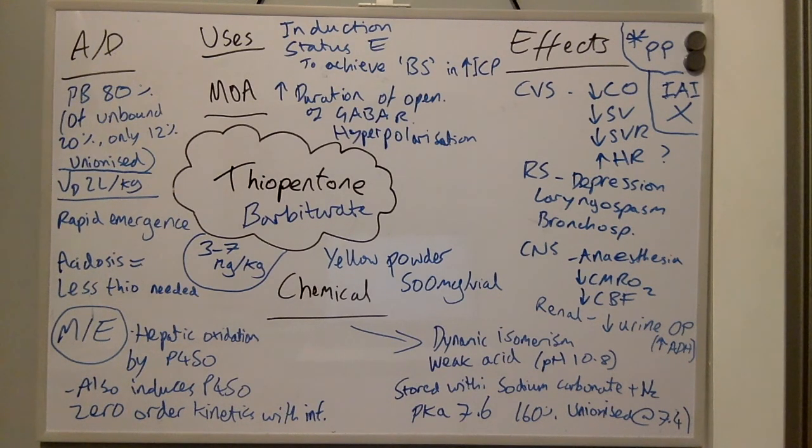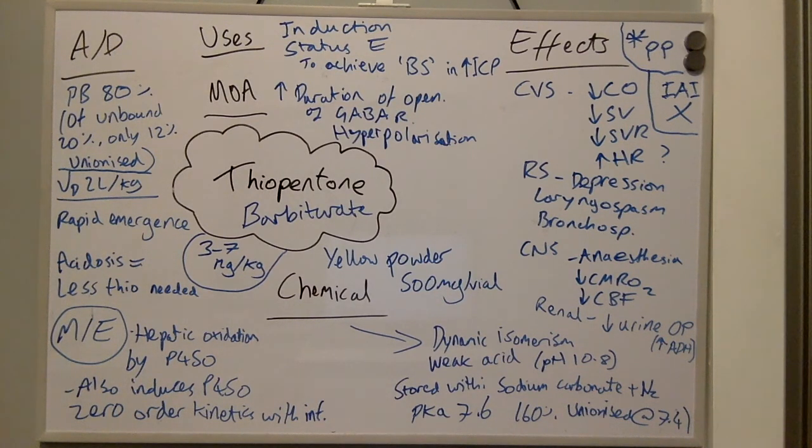For its absorption and distribution, it is 80% protein bound, and of the unbound 20%, only 12% is unionised. It has a volume of distribution of 2 litres per kilogram and will see a rapid emergence because of redistribution into the body's tissues. When a patient has an acidosis, less thiopentone is needed because it becomes less protein bound.